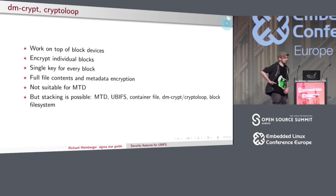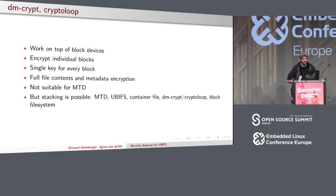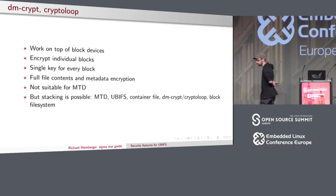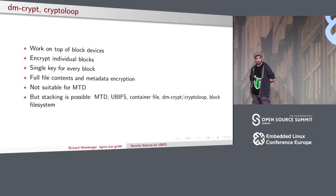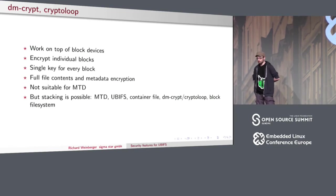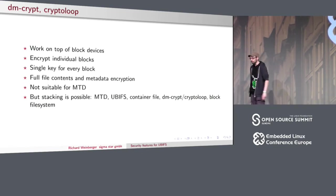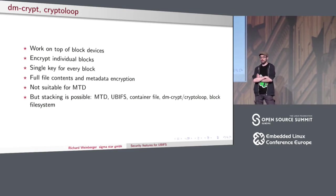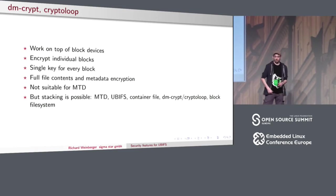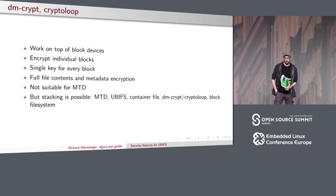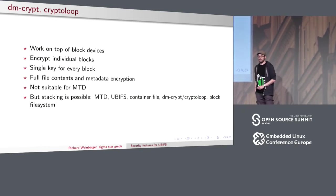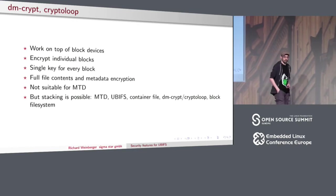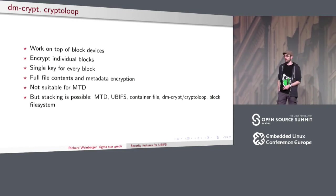DMCrypt and CryptoLoop both work on block devices. That's the first no-go for UBIFS, because on the raw NAND layer we don't have block devices. In DMCrypt, each block on the storage is encrypted, but always with the same key. That's one of the weakest points of DMCrypt — you are reusing the key all the time.